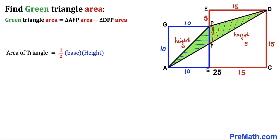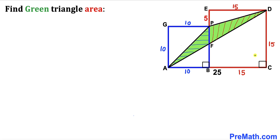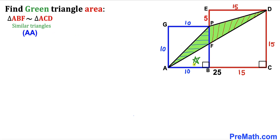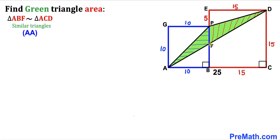Focusing on the squares, all angles are 90 degrees. We can see that smaller right triangle ABF is similar to big right triangle ACD by the angle-angle similarity theorem, since both share a 90-degree angle and angle A is in common between both triangles. Let's assume the length of segment FB is X units.